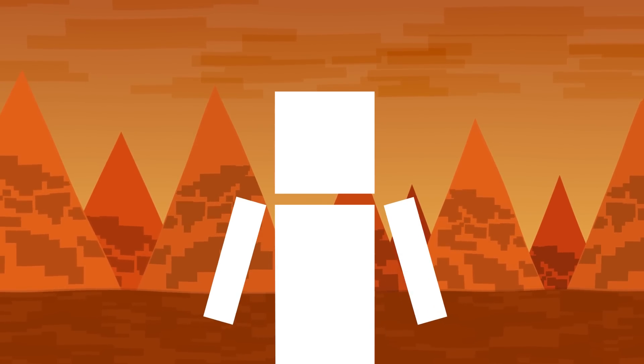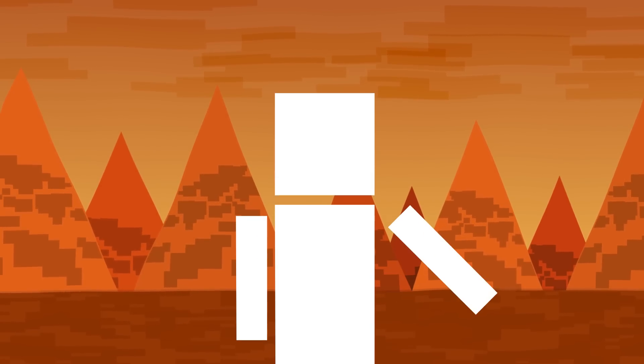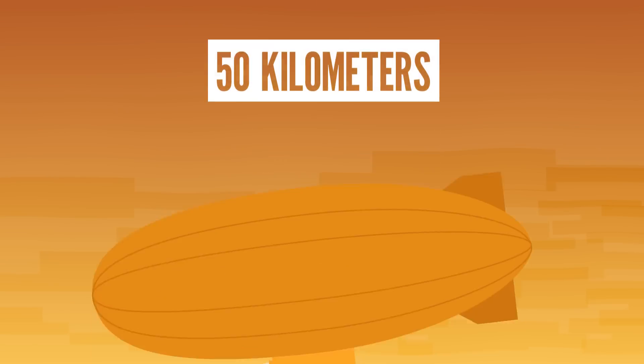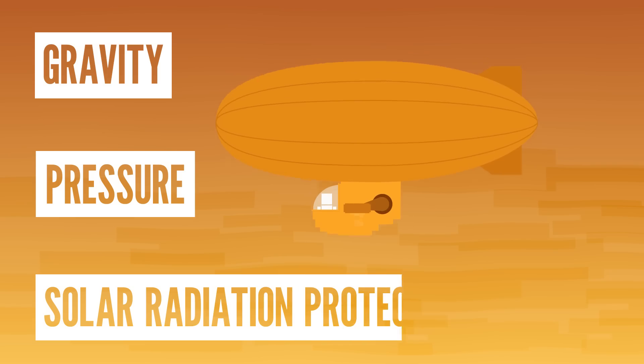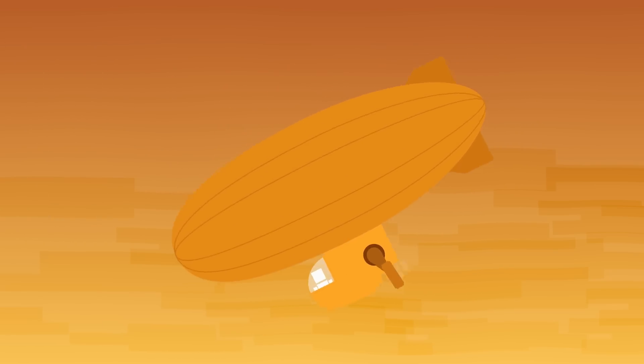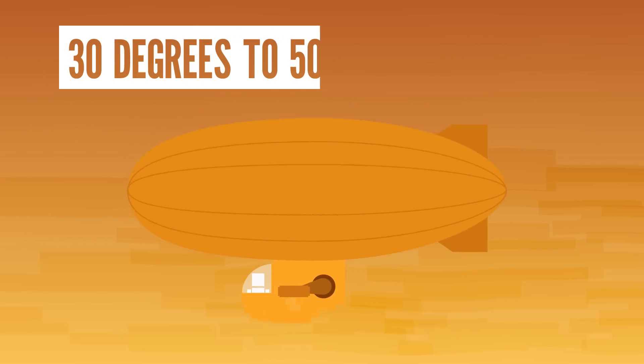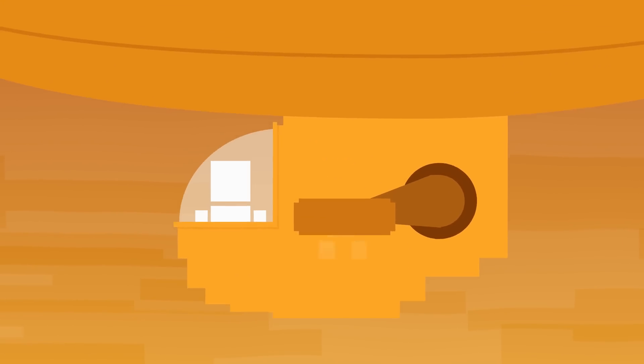But people have some pretty viable ideas for space colonies in Venus' neck of the woods. About 50 kilometers above Venus' surface, there is an air space with similar gravity, pressure, and solar radiation protection to what we have here on Earth. The temperature ranges from about 30 degrees to 50 degrees Celsius, creating a fairly livable atmosphere. This all sounds pretty promising, and NASA thinks so too.